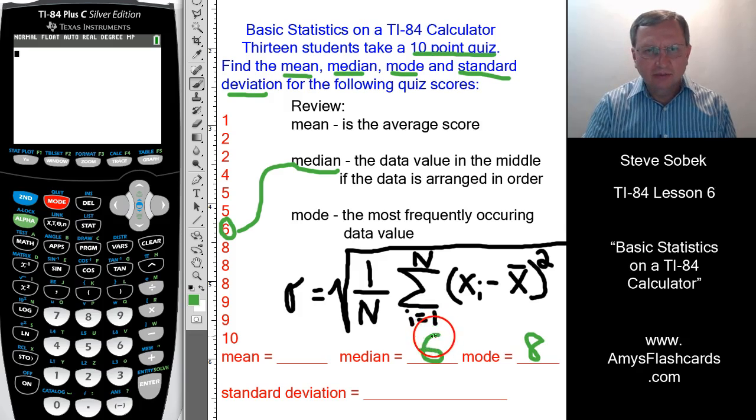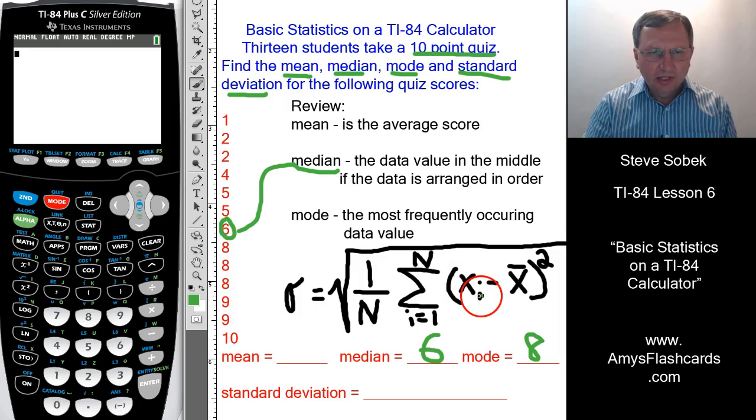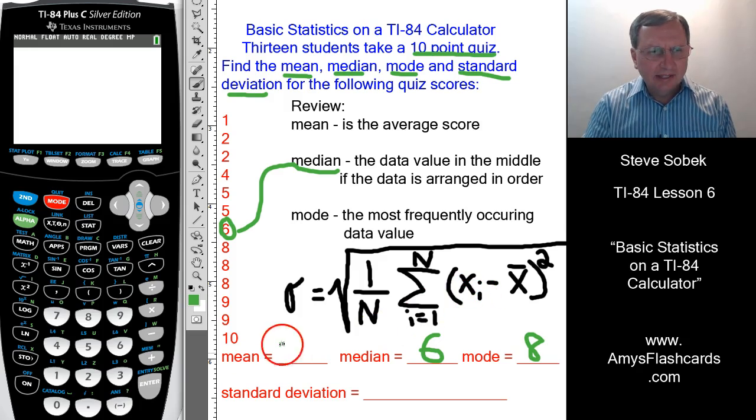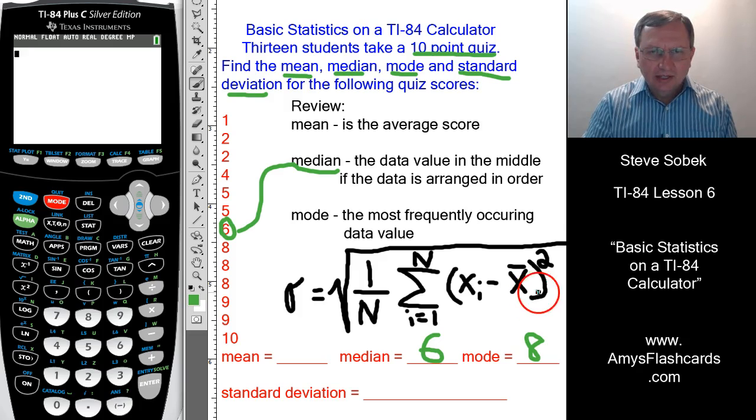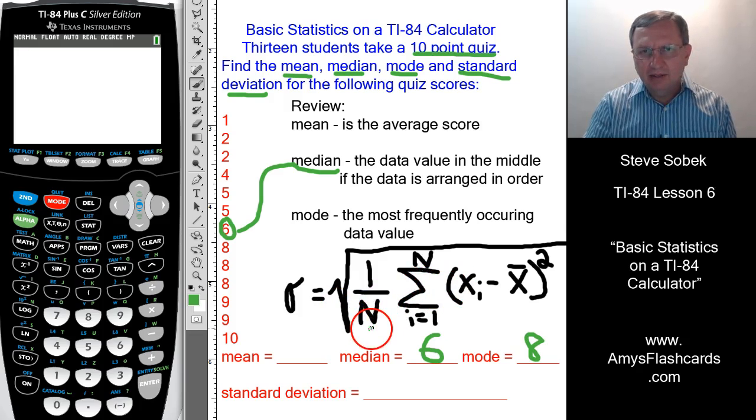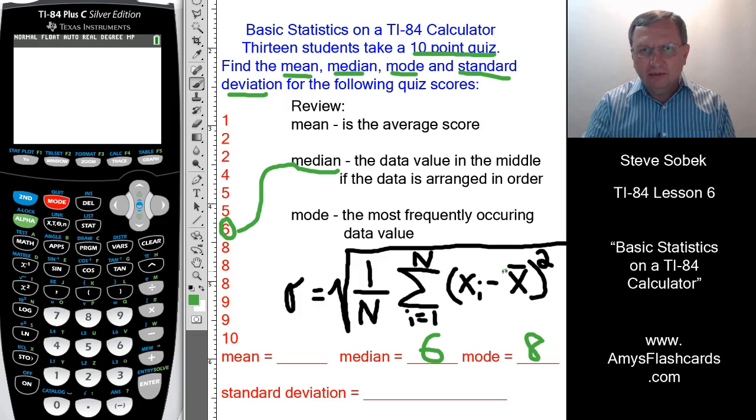And this uppercase Greek symbol, sigma, is our summation symbol. So if i goes from 1 to n, it means that x sub 1 represents the first data value. X sub 13 would be the last data value, which would be a 10. And x bar is how we denote the mean, or the average. We're finding the difference between each data value and the mean, squaring those, then adding them all together, that's what this summation symbol means, and dividing by 13, the number of data values, and taking the square root of that result. That would take a long time with paper and pencil.